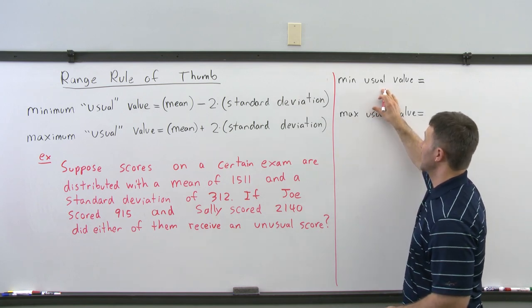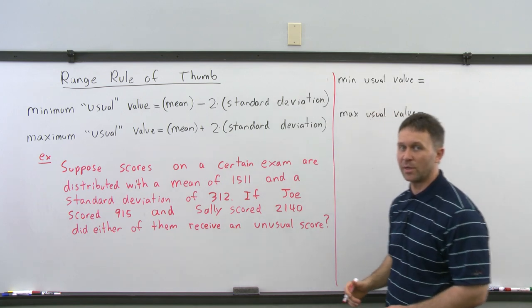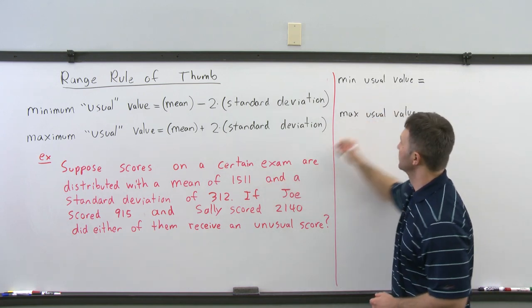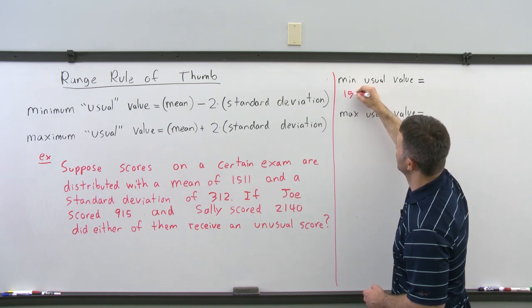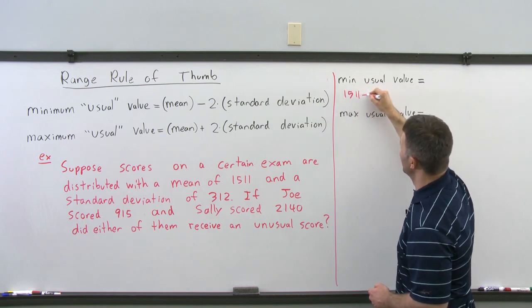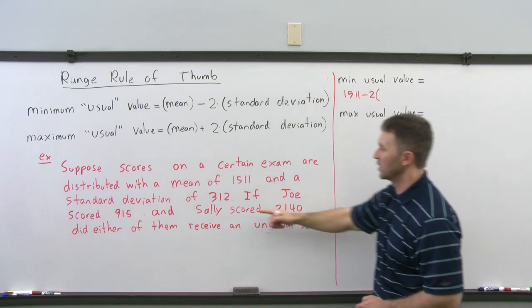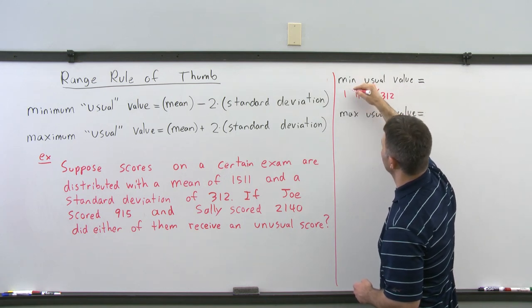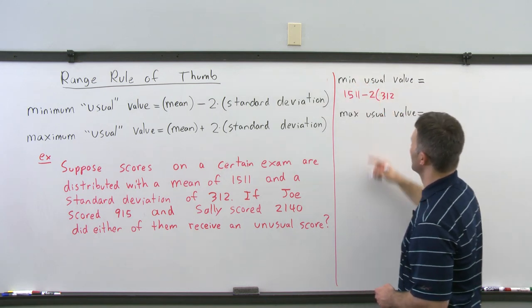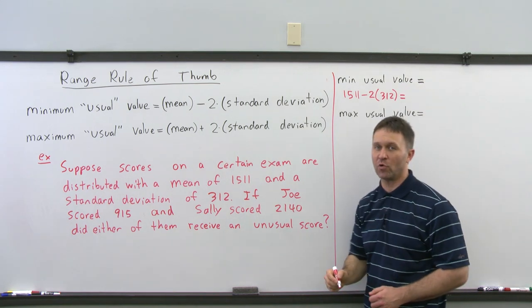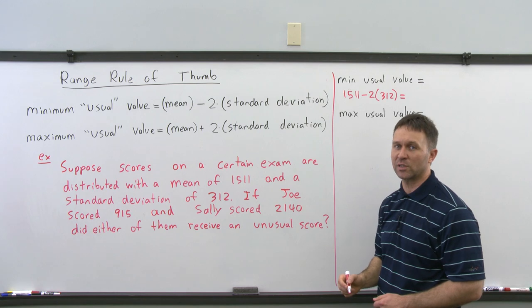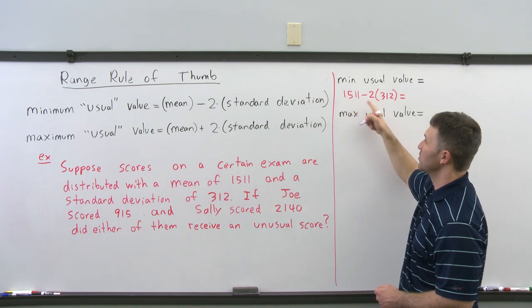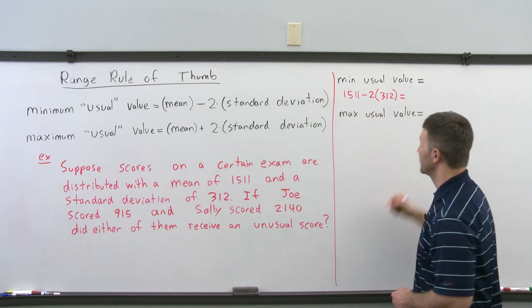First we're going to calculate the minimum usual value. The minimum usual value is the mean minus two times the standard deviation. The mean in this problem was 1511 minus two times the standard deviation of 312. So this is 1511 minus two times 312. Remember order of operations — multiplication comes before subtraction. Two times 312 is 624, and 1511 minus 624 gives you 887.